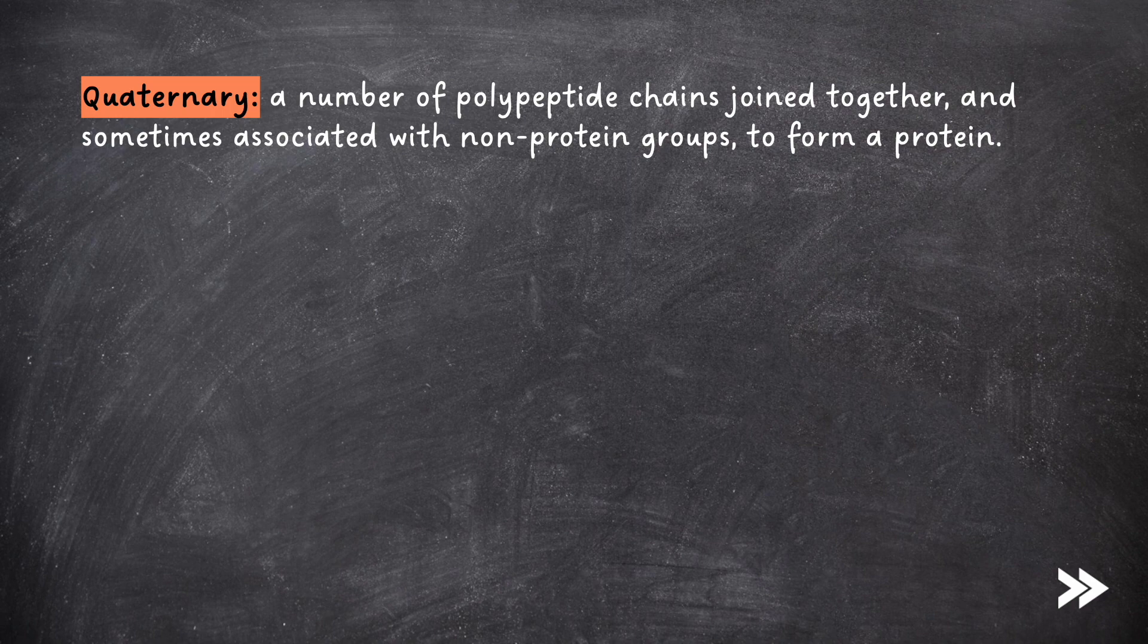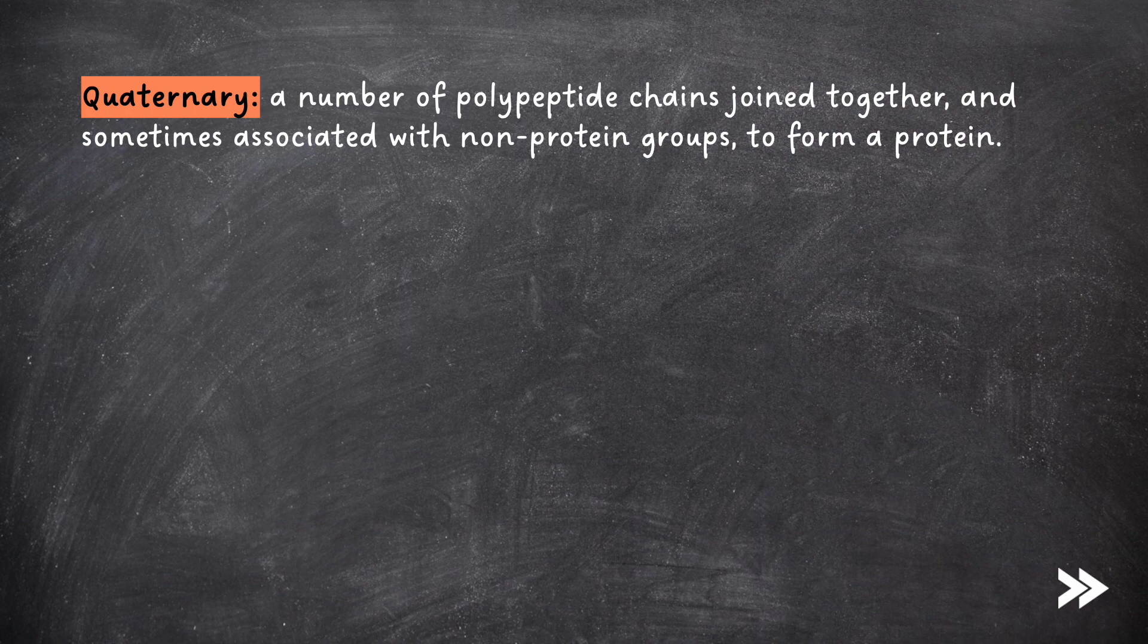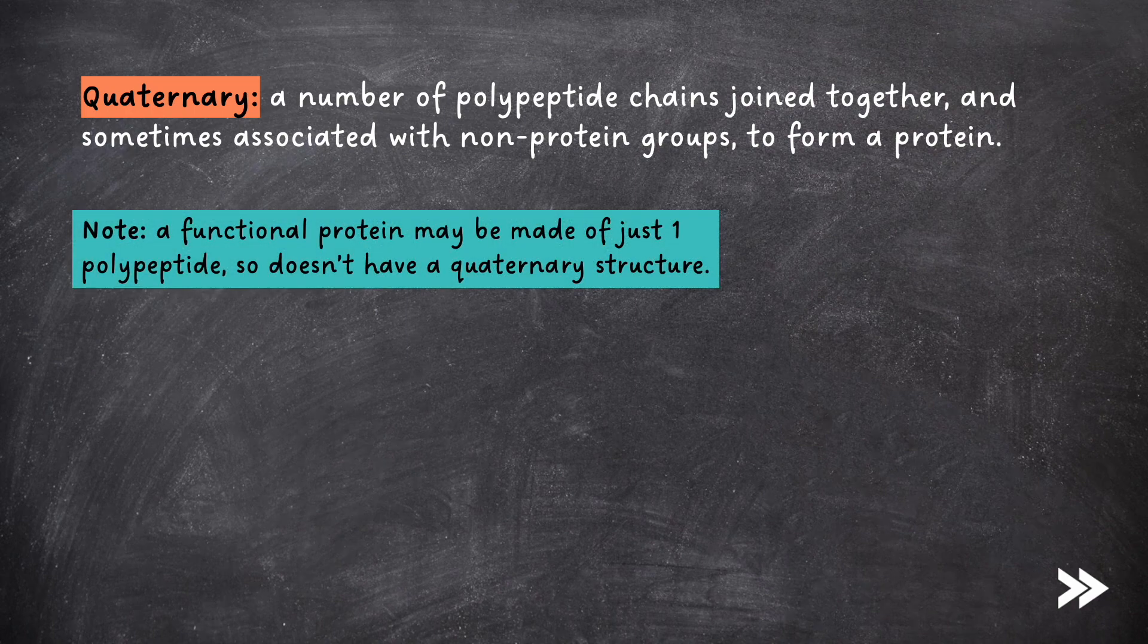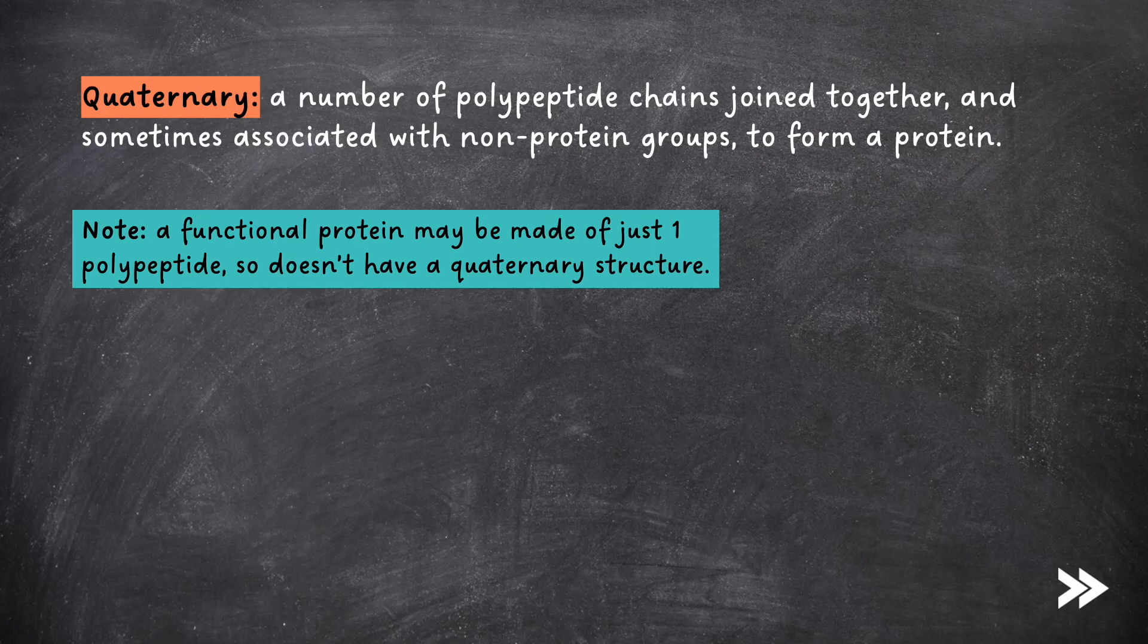Some proteins also have a quaternary structure, which is a number of polypeptide chains linked together, and sometimes associated with non-protein groups to form a protein. Note that a fully functioning protein may be made of just one polypeptide, so it doesn't have a quaternary structure.